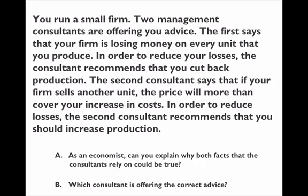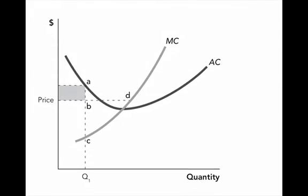The next question is a practice problem: you run a small firm, and two consultants offer advice. The first says your firm is losing money on every unit produced and recommends cutting production. The second says that selling one more unit would generate more revenue than the extra cost, and recommends increasing production. As an economist, are both facts possibly true? And which consultant gives better advice? A graph helps here: on the horizontal axis is quantity, on the vertical axis is price.